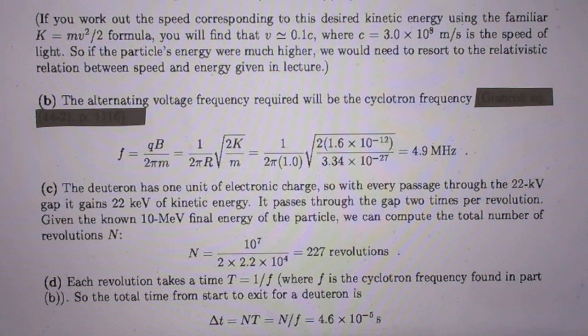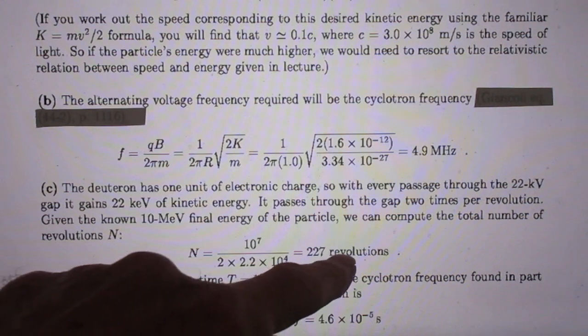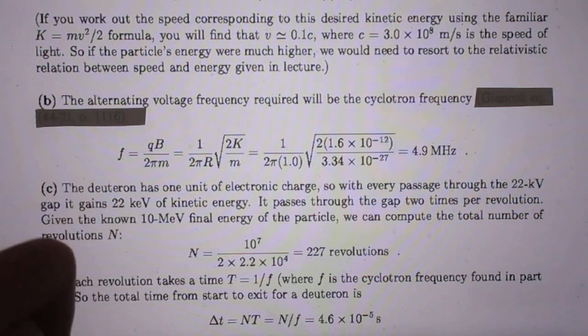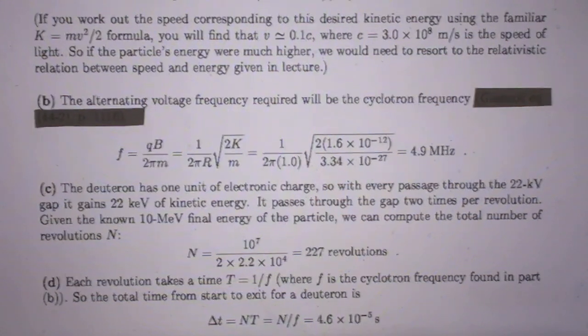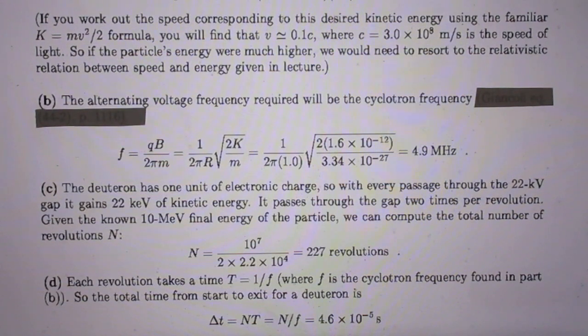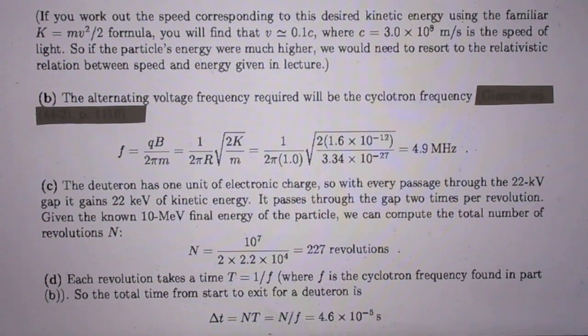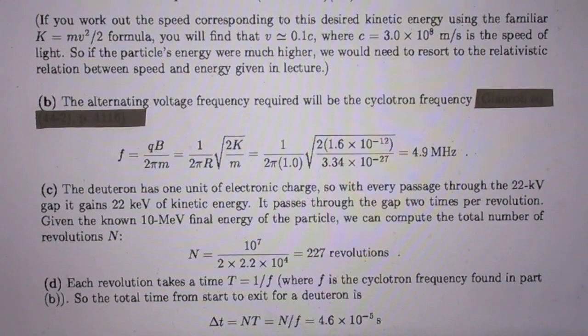So the total time from start to exit for a deuteron is the number of revolutions times the time that it takes. And the time that it takes is 1 over F. And we know F already, we calculated that. So out pops that the whole acceleration takes place in about 4.6 times 10 to the minus 5 seconds. That is the result of part D.